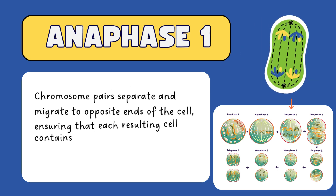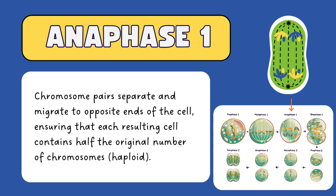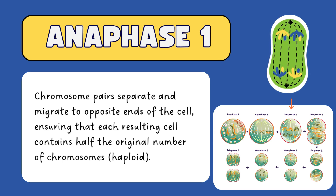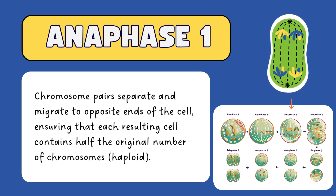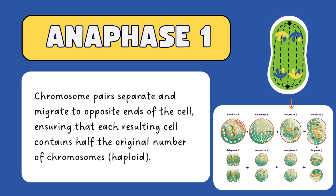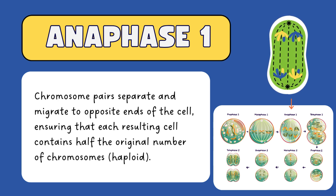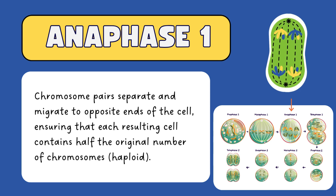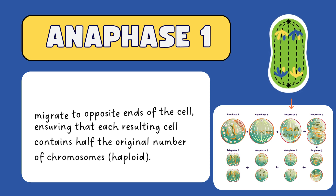In anaphase I, the chromosome pairs separate and migrate to opposite ends of the cell. This separation ensures that each resulting cell contains half the original number of chromosomes, resulting in haploid daughter cells.